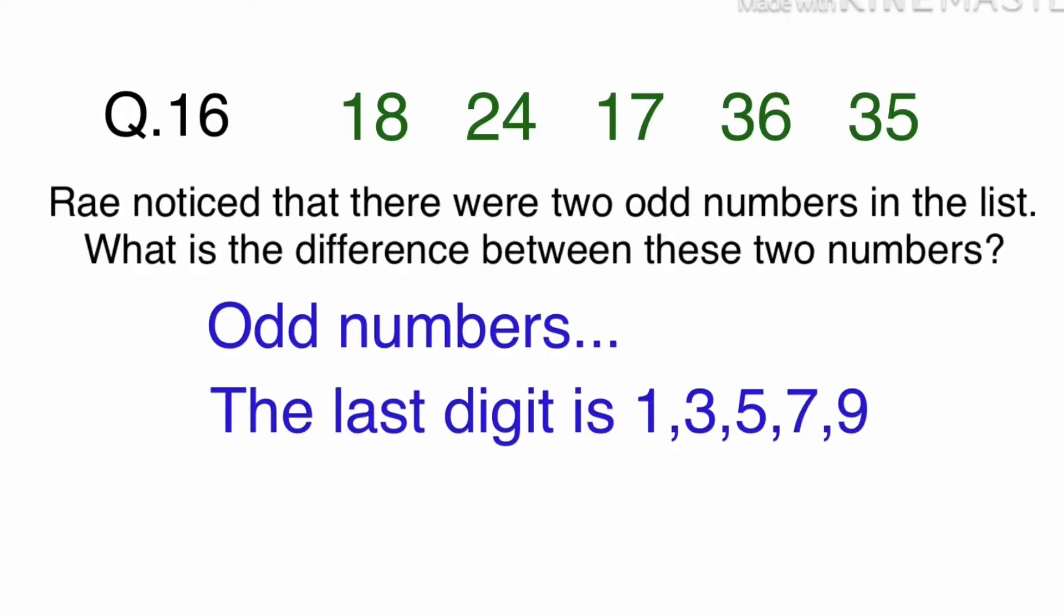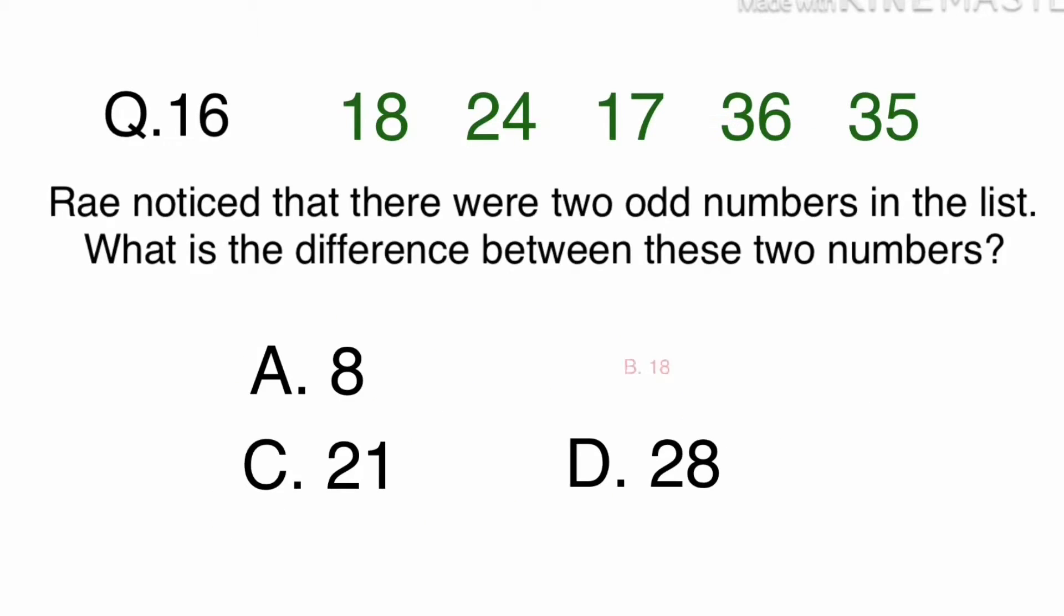Odd numbers are numbers that end in 1, 3, 5, 7, or 9. 35 and 17 are the two odd numbers in this question. Simply take 17 away from 35 to get 18. The answer is B. 18.